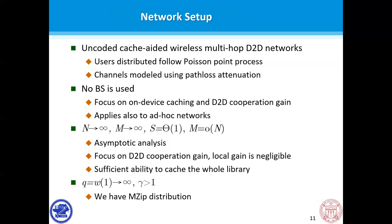Consider the following setup. We consider the uncoded cache-aided wireless multi-hop D2D networks. User distribution is assumed to follow a Poisson point process. Channels are modeled using path-loss attenuation. We assume no base station assistance for delivering. We focus on distributed caching and D2D cooperation gain. We assume the number of users goes to infinity, number of files in the library goes to infinity, and the caching size of a device is a constant. We assume the average number of users in the network is much larger than the library size, so the network has sufficient ability to cache the whole library.